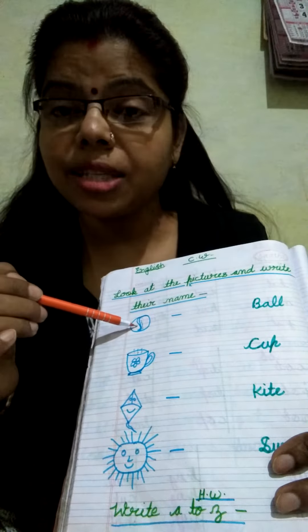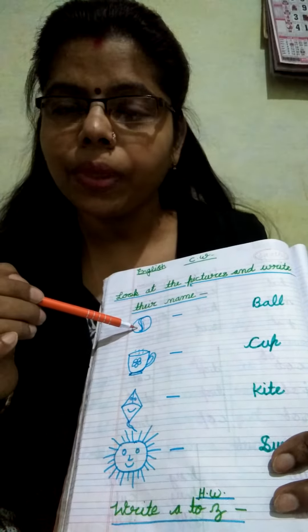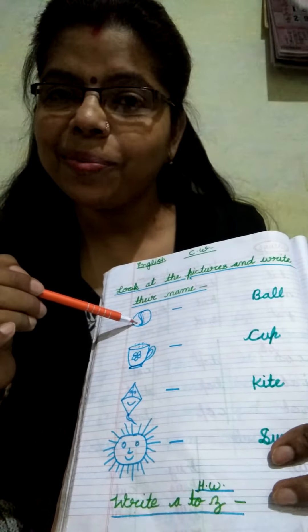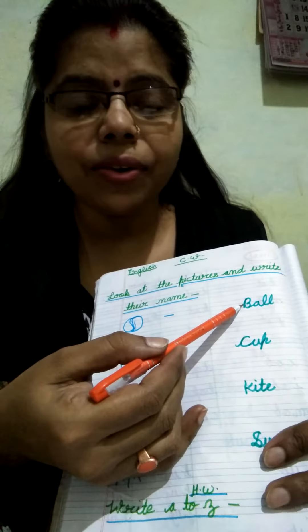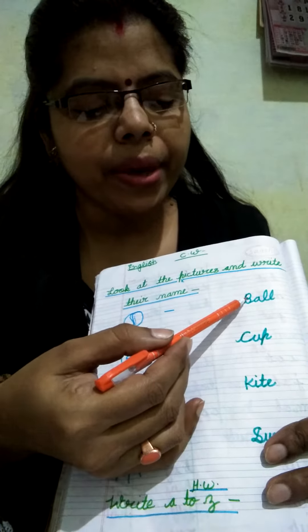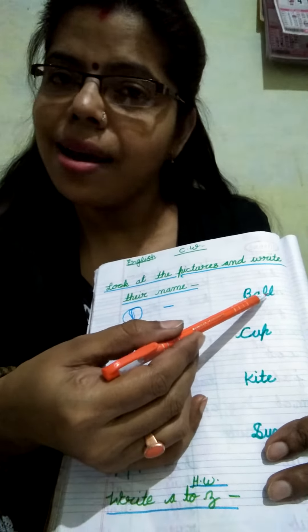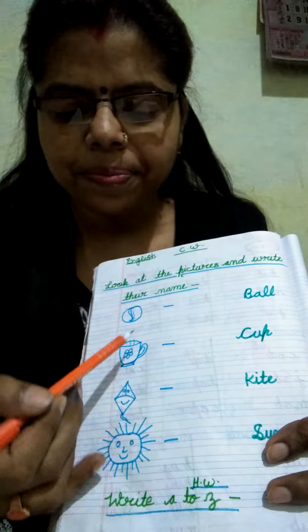What is this picture? Very good — ball. So, ball ki spelling kya hoti hai? B-A-L-L. Ball.